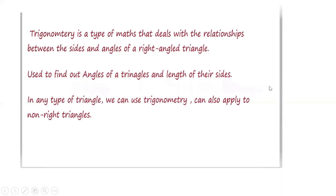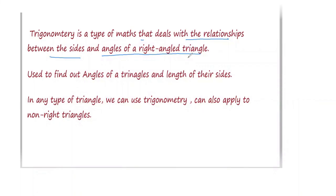Trigonometry is a type of mathematics that deals with the relationship between the sides and the angles of a right angle triangle. It is basically a science, or we can say it is a part of maths where we are dealing with the relationship between the sides and the angles of a right angle triangle.